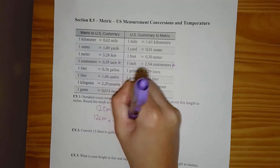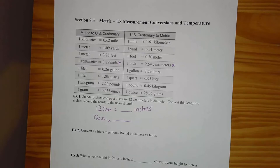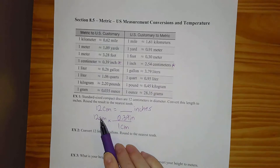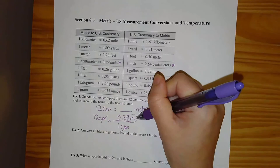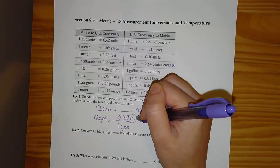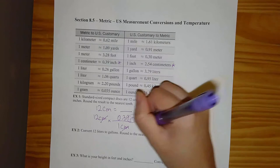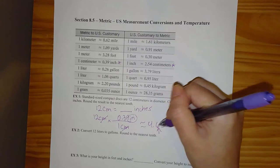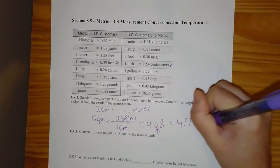I'm going to set up a conversion ratio, very similar to how we did US measurements in section 8.1. One centimeter is about 0.39 inches. I put one centimeter on the bottom and 0.39 inches on top — I want my centimeters to cancel out, so that's why centimeters go on the bottom; I want to end in inches, so inches are on top. So I'm doing 12 times 0.39, and I get about 4.68. It says to round to the nearest tenth, so the eight makes the six round up — this rounds to about 4.7 inches.